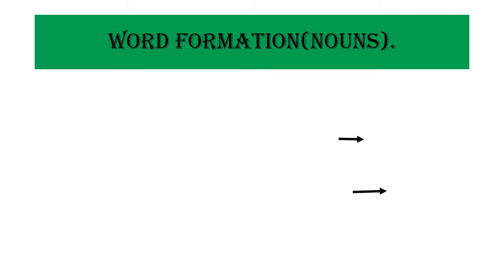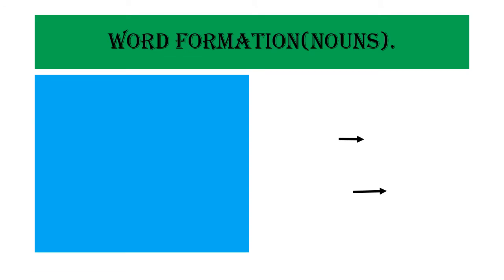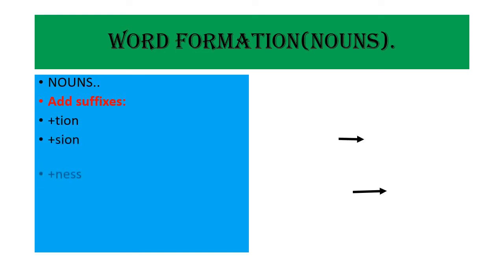The first topic I've selected is how to make nouns. Here are certain rules. We first need to add suffixes. Suffixes are additional letters or words added after a word — for example: -tion, -sion, -ness, -ance, -ence, -ment.